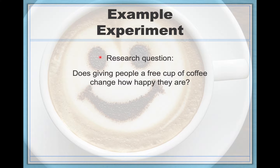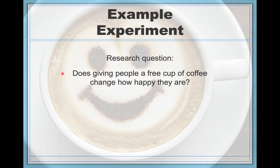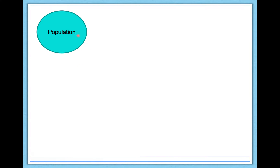Here's the research question: Does giving people a free cup of coffee change how happy they are? I expect that it would — coffee's amazing. You can test this question in many different ways. I could do a between-subjects design using an Independent Samples T-Test with an Experimental and Control Group. In the Experimental Group, give people coffee and measure happiness; in the Control Group, give them nothing and compare. But a really nice way is to do a within-subjects design using a Dependent Samples T-Test.